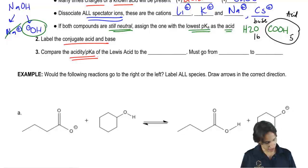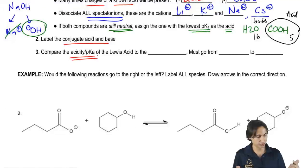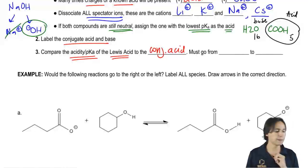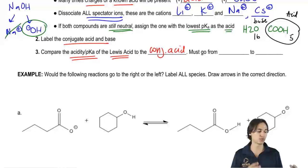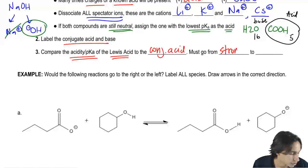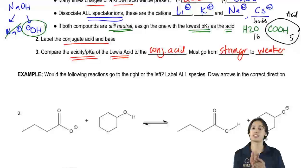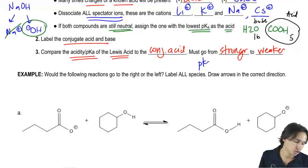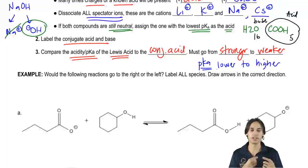So then the last step is compare the acidity or pKa, basically acidity and pKa are the same thing, of the Lewis acid to the conjugate acid. And remember that in order to go in that direction, you're going to have to go from stronger to weaker. Now one way I like to say that is that the strongest acid is going to be the one with the lowest pKa. So I always say that the pKa should go from lower on the left to higher on the right pKa because remember pKa is the opposite of strength. So you want a low pKa to start with and you want a high pKa at the end.